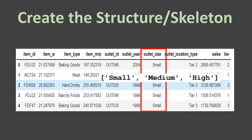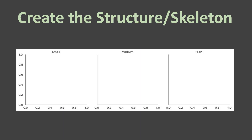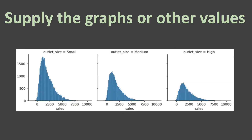Based on this, you want to have individual plots for each of these three items. First, you create the structure — you can also call it the skeleton. This structure is completely empty, because FacetGrid provides you the flexibility to supply whatever kind of plot you want. The next step is supplying the graphs or other values.